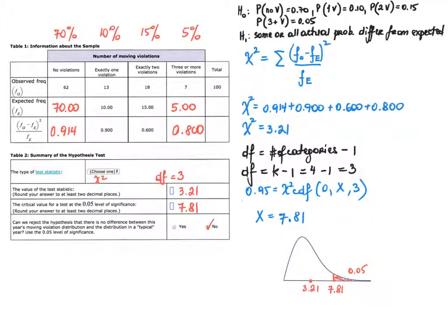The first row indicates the quantities observed: out of a random sample of 100 customers, 62 had no violation, 13 had exactly one, 18 had exactly two violations, and 7 had three or more. The expected frequencies, labeled F sub E, we have to compute ourselves. Two of them are given already. To compute the others, find 70% of 100, which is 70, or 5% of 100, which is 5.